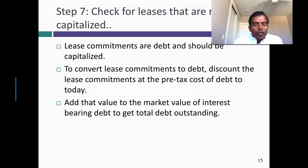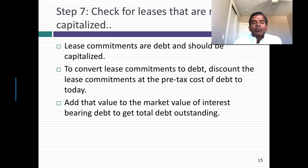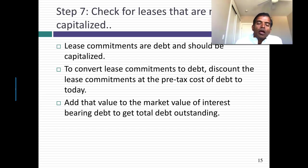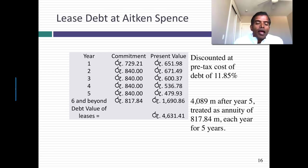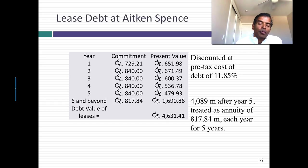Then I stop to see what the accountants have missed — in particular, lease commitments, which around the world have been treated as not debt. That's supposed to be fixed in 2019, but I'm not going to wait for accountants to come to their senses. I take lease commitments and convert them to debt by discounting them back using the pre-tax cost of debt, because these are pre-tax commitments. For Aitken Spence, which has substantial lease commitments as a hotel company, the projected lease commitments are broken out for the next five years, and a lump sum of 4,089 million is given beyond that — which I spread as an annual commitment of 817.84 million for five years. Discounting at 11.85%, I get a present value of 4,631 million as the debt value of leases.